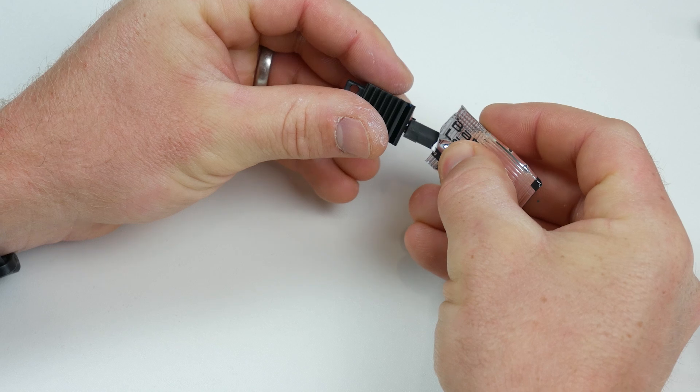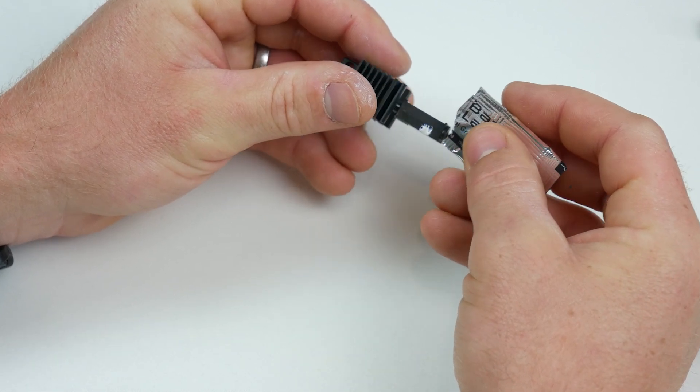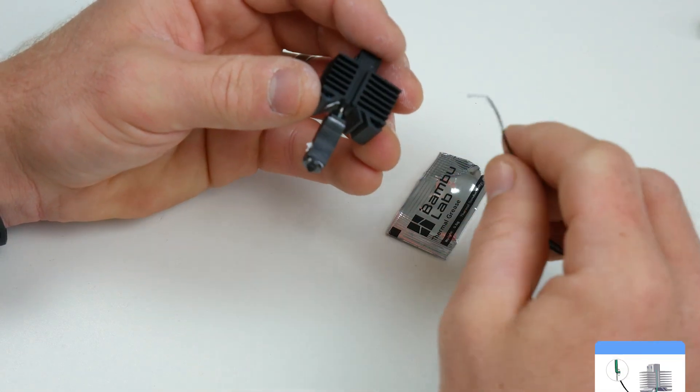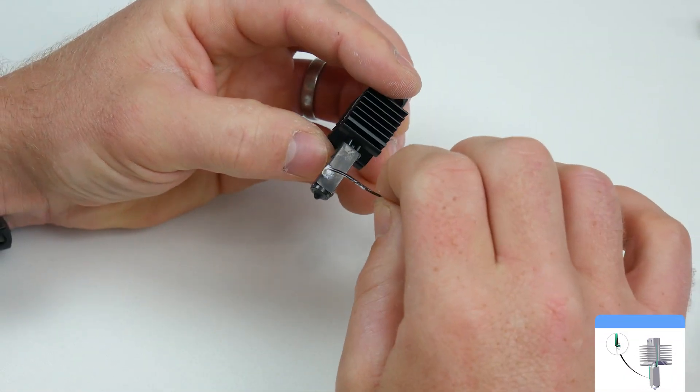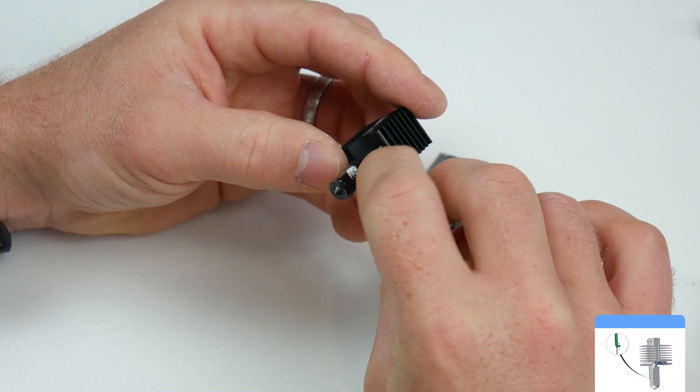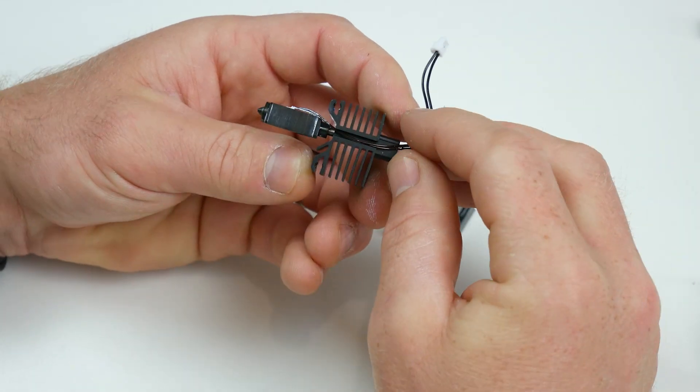So first of all, we're going to put a bit of heat sink compound in the little hole for the temperature sensor and gently slide that into the little hole, making sure that the cables run up this little rebate inside the heat sink.